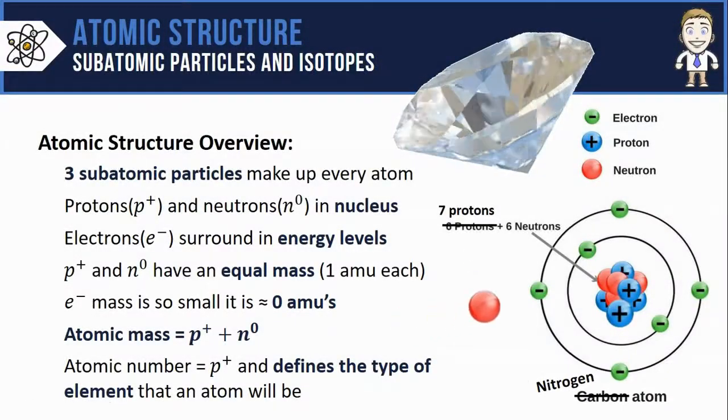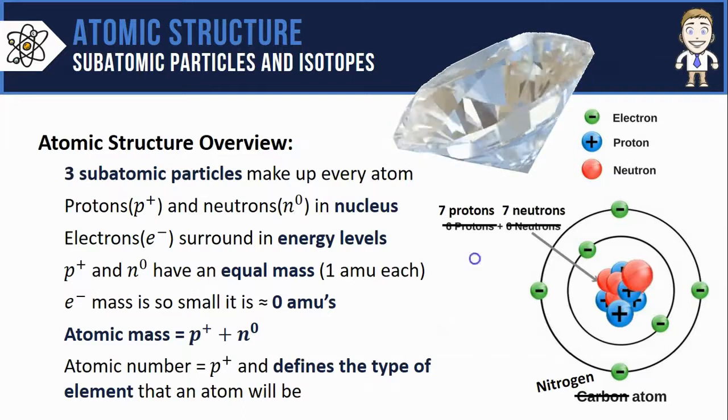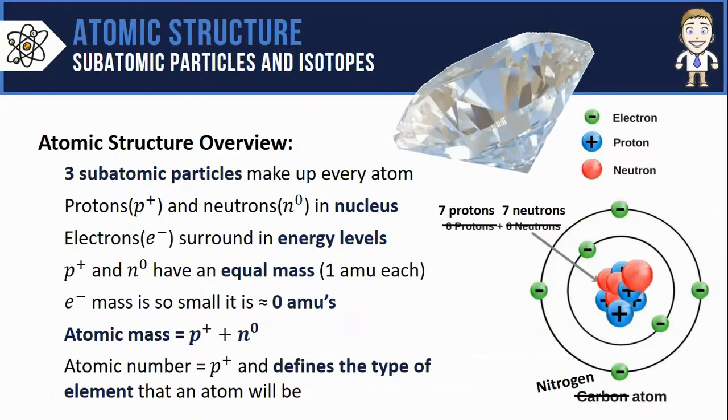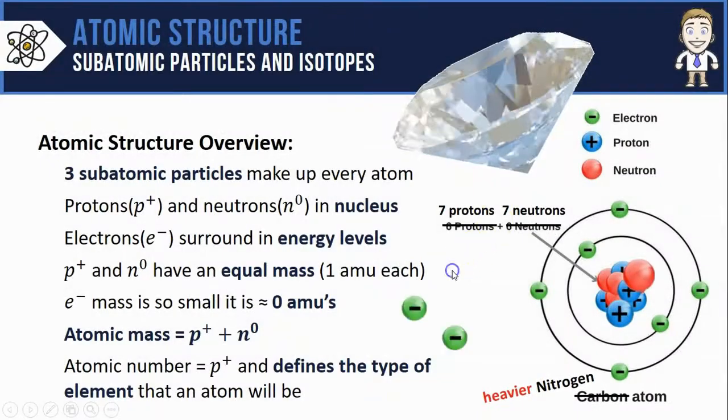If we did the same thing but instead added an extra neutron, that wouldn't affect the type of element it would be. Even though there's a different number of neutrons, it's still nitrogen. It's technically just a heavier nitrogen.